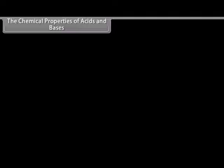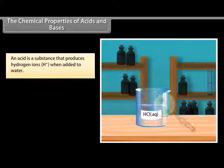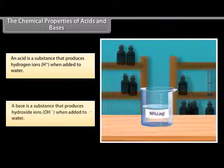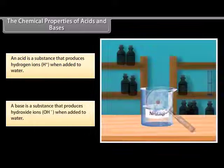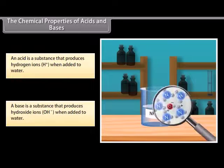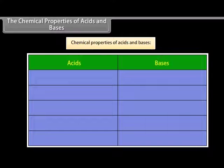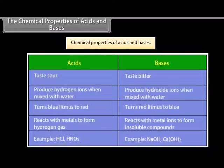An acid is a substance that produces hydrogen ions when added to water, whereas a base is a substance that produces hydroxide ions when added to water. Both acids and bases have different chemical properties. Let us look at their properties.